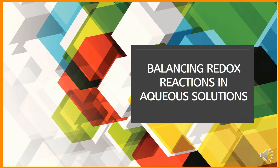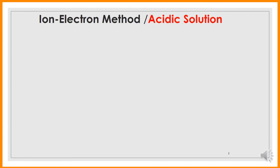Good morning, dear students. Our lecture today is about balancing redox reactions in aqueous solution. One of the easiest methods to balance equations for redox reactions is to follow a procedure called the ion-electron method. This method can be applied in acidic or basic solution, so before we apply it, we have to know whether the reaction occurs in an acidic or basic solution. The ion-electron method provides a systematic procedure consisting of the following steps.